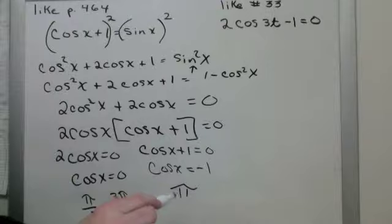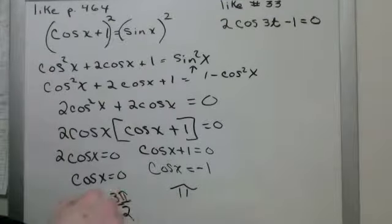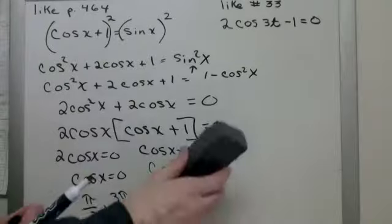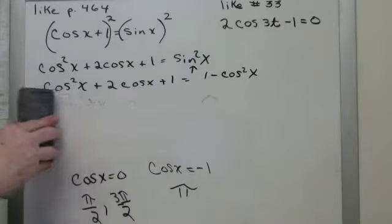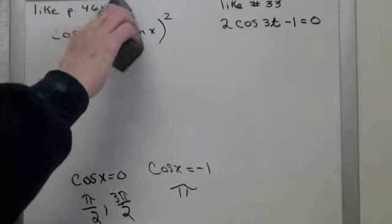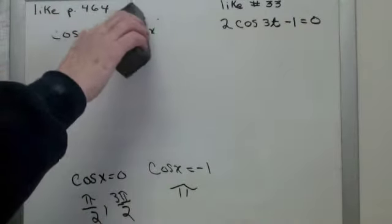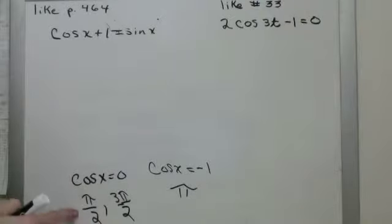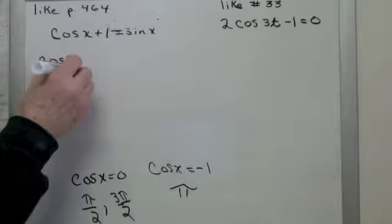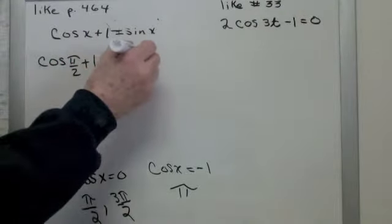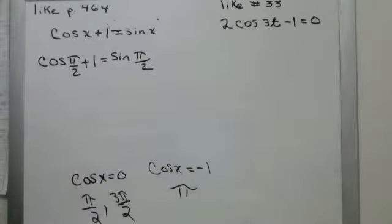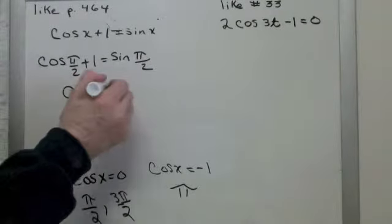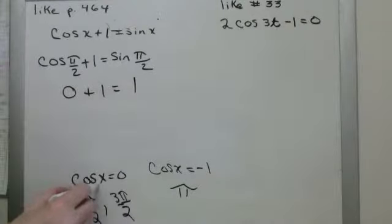Now remember what I said. When you solve something by squaring it, sometimes you get some answers that don't work. So that means we need to test all of these answers in the original. So let's check pi over 2. Cosine pi over 2 plus 1 has to equal sine pi over 2. What's cosine pi over 2? That's 0 plus 1. What's sine of pi over 2? That's 1. 0 plus 1 equal 1? Yeah, so pi over 2 checked.